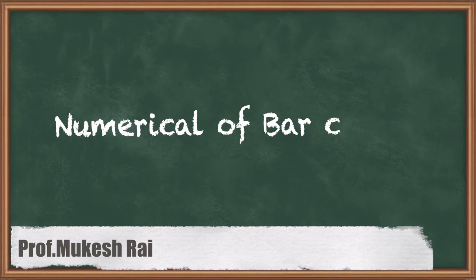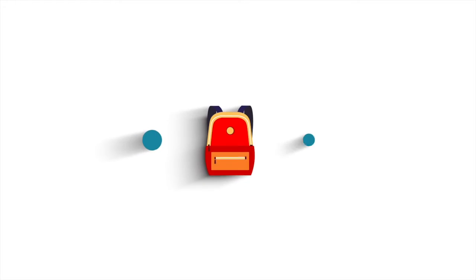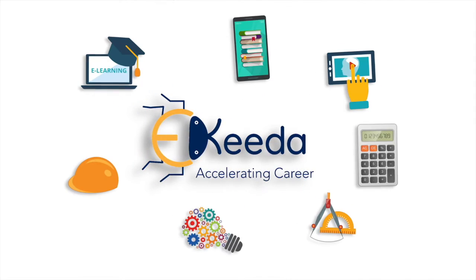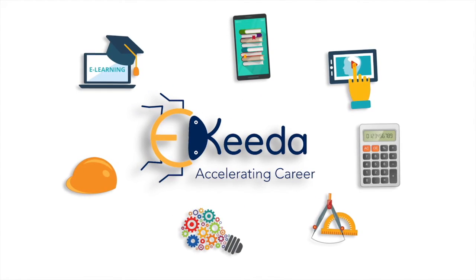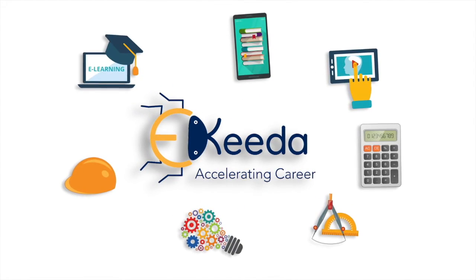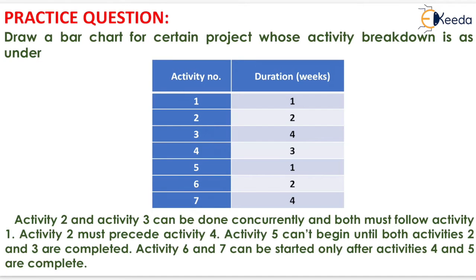Hello students, today we are going to solve a numerical of bar chart. The question is: draw a bar chart for a certain project whose activity breakdown is as under.